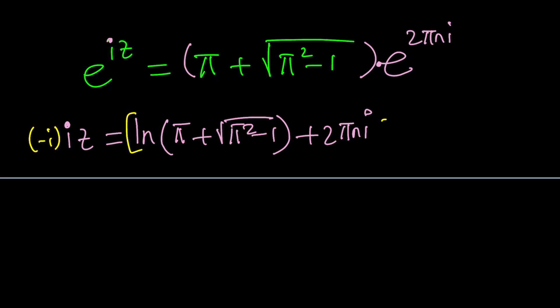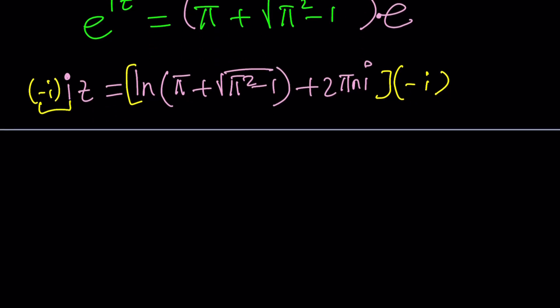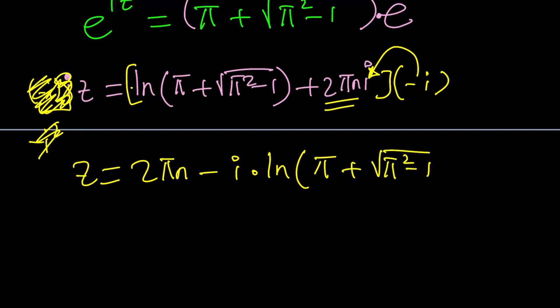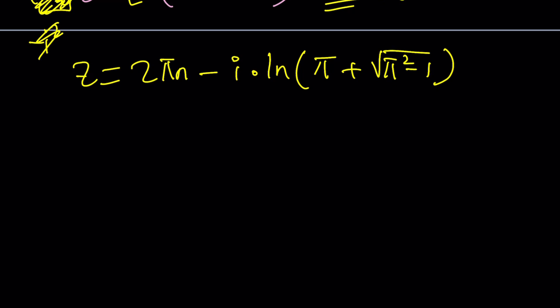Because negative i times i is negative i squared. And as you know, hopefully, i squared is negative 1. Negative i squared is 1. So, this just disappears. Isn't that cool? We end up with z. Great. Awesome. And then this is also going to turn into a 1. So, we're going to start with that because that's the real part. 2 pi n. And there's going to be a minus sign here. No worries. It's just going to be minus i times ln pi plus the square root of pi squared minus 1. Z is equal to this.